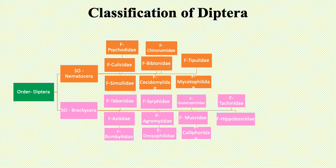Here is a flowchart for the classification of order Diptera. Order Diptera is divided into two suborders: suborder Nematocera and suborder Brachycera. There are no superfamilies described. Suborder Nematocera has eight families: Psychodidae, Culicidae, Simulidae, Chironomidae, Bibionidae, Cecidomyiidae, Tipulidae, and Mycetophilidae.